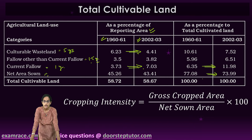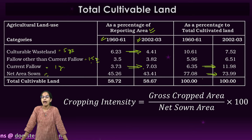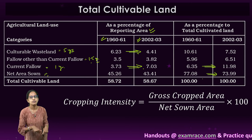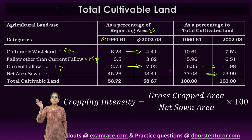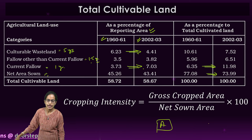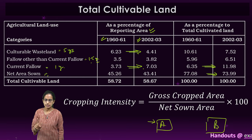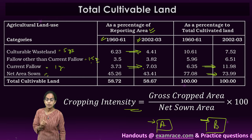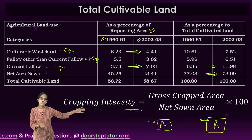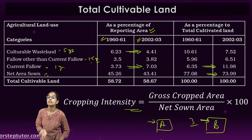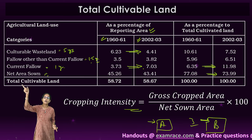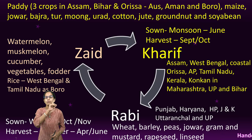Cropping intensity — how intensely you are cropping on the same parcel — is calculated as the ratio of gross cropped area to net sown area. For example, in land parcel A with only one crop per season, cropping intensity is low. In land parcel B, where crops are grown twice a season across Kharif, Rabi, and Zayad seasons, cropping intensity is significantly higher.